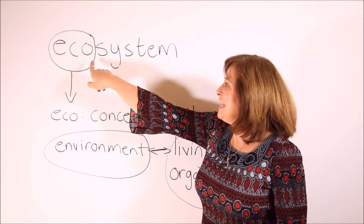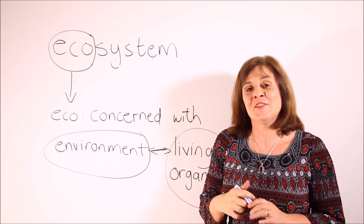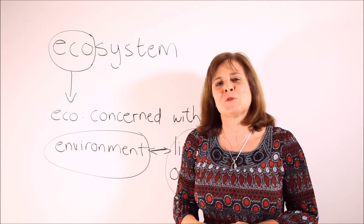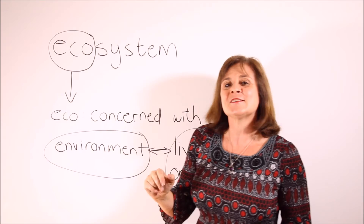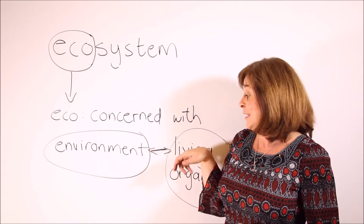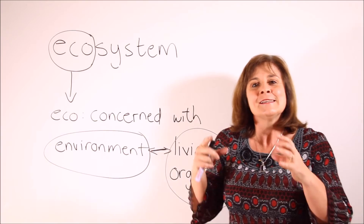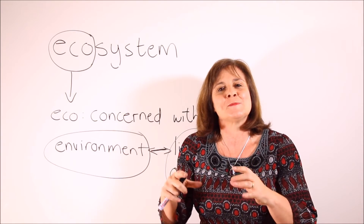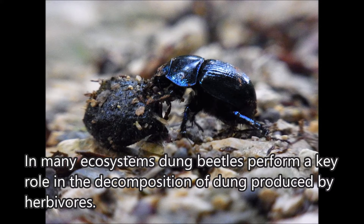Now for the word ecosystem. Whenever you see the word eco in combination with other words, you can assume with great probability that that word will be about the environment. An ecosystem is concerned with the complex relationships of living organisms with each other and their environment — a web of complex relationships in a specific habitat or place. In many ecosystems, dung beetles perform a key role in the decomposition of dung produced by herbivores.